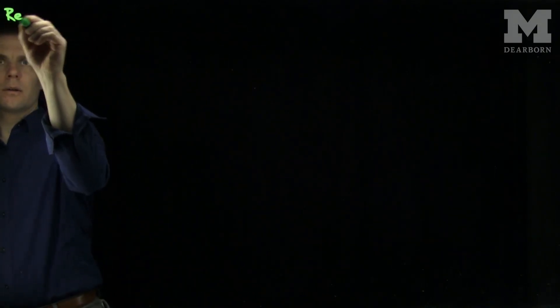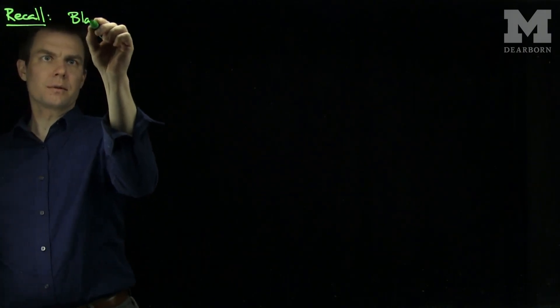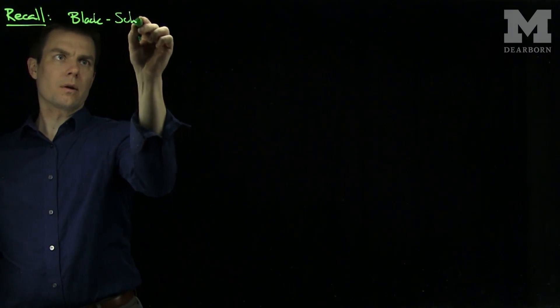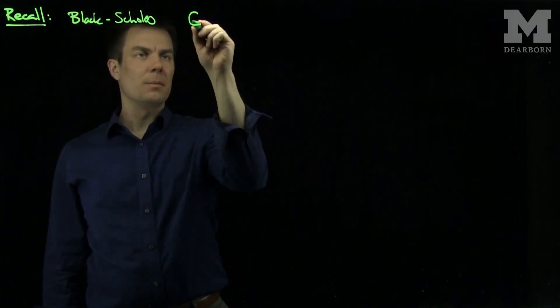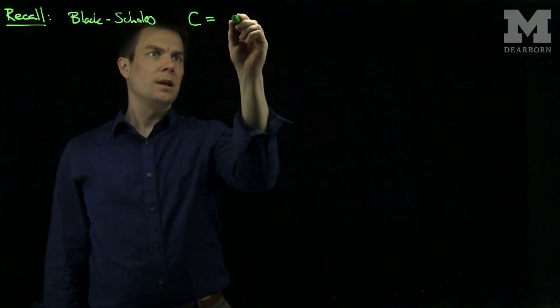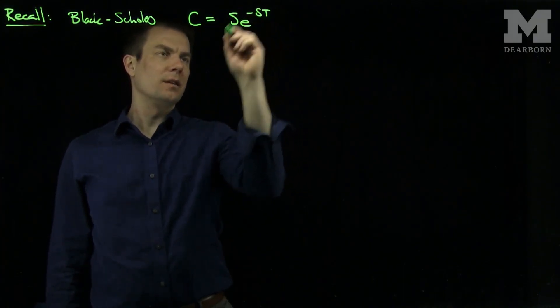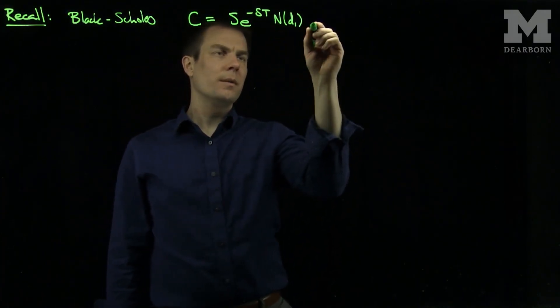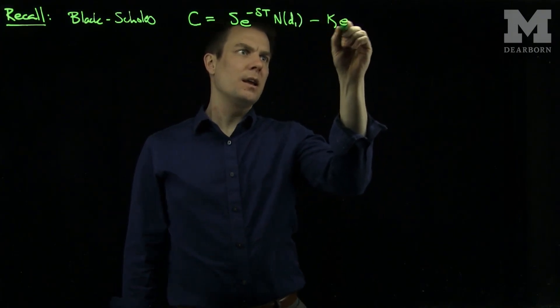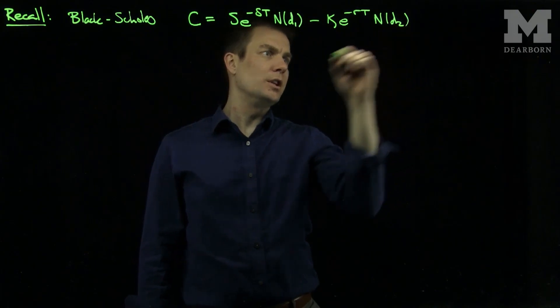Let's recall that Black-Scholes gives us a formula for a call option, namely the premium of a call option is s e to the negative delta t n of d1 minus k e to the minus rt n of d2.